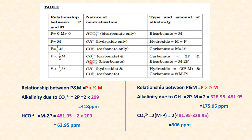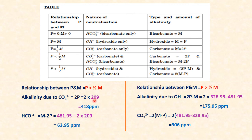If P < M/2, the ions causing alkalinity are carbonate and bicarbonate. Carbonate alkalinity = 2 × P = 2 × 209 = 418 mg/L. Since methyl orange alkalinity is total alkalinity, bicarbonate alkalinity = total − carbonate = 481.95 − 418 = 63.95 ppm. This is equivalent to using the formula M − 2P.